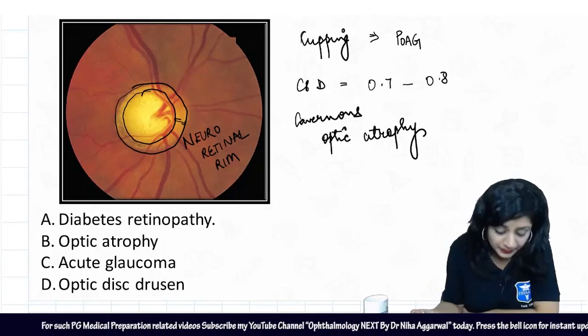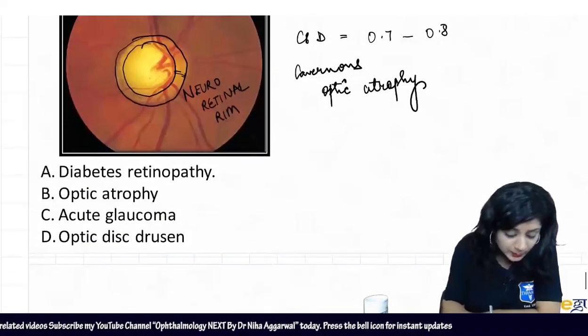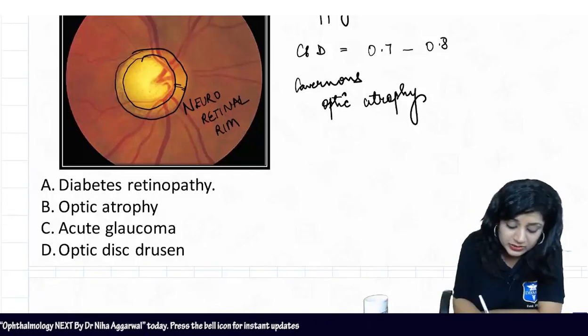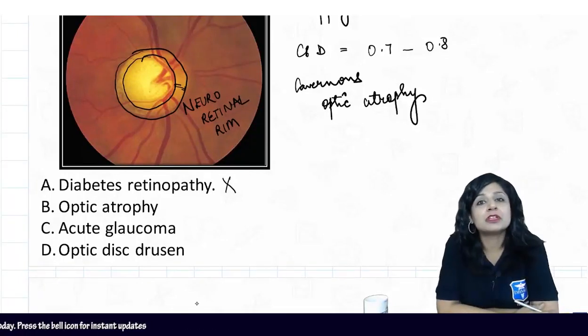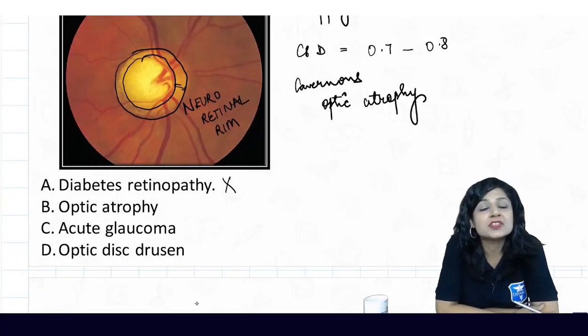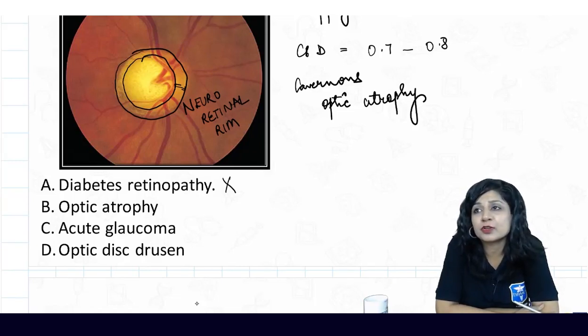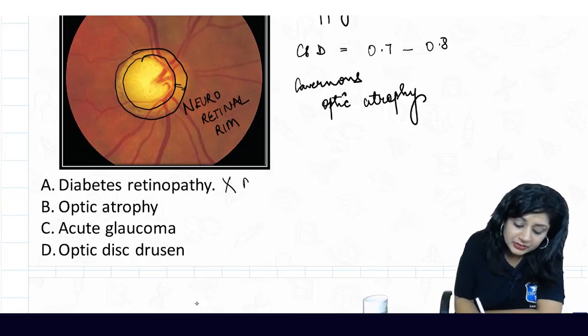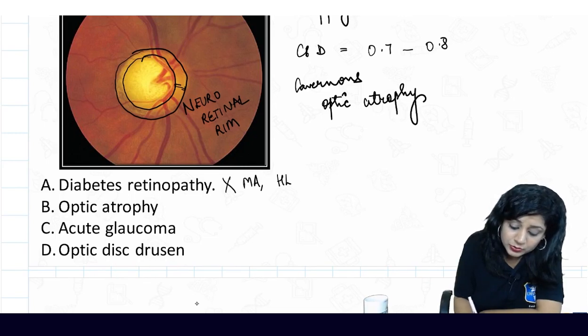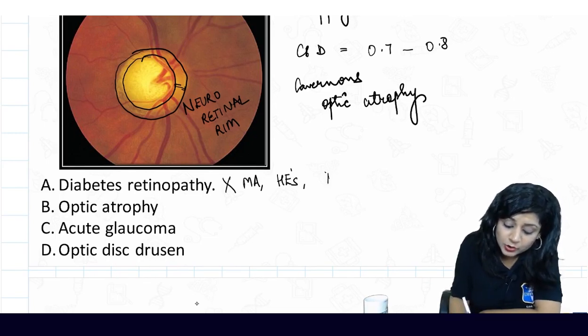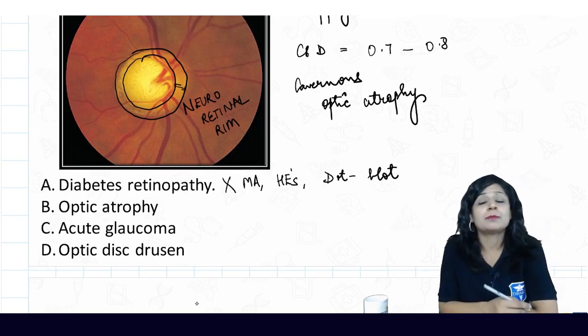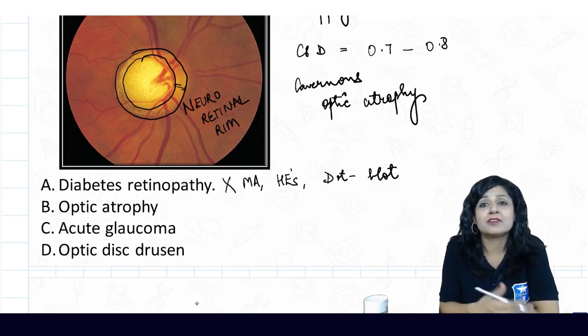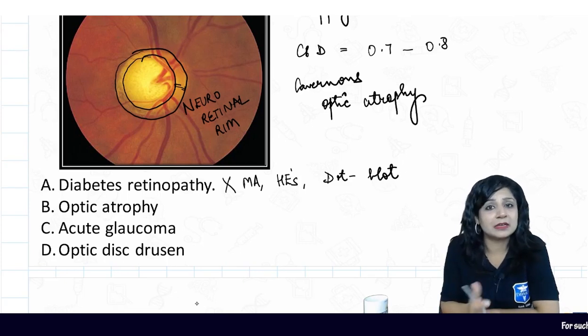Now look at the options. Options are diabetic retinopathy, so of course it is not the changes which are found in diabetic retinopathy. What are the changes that you get in the fundus of diabetic retinopathy? I will get the microaneurysms, I will get the hard exudates, then I will get the dots and the blots hemorrhages, intraretinal microvascular changes, I will get venous changes looping, beading, but not this.